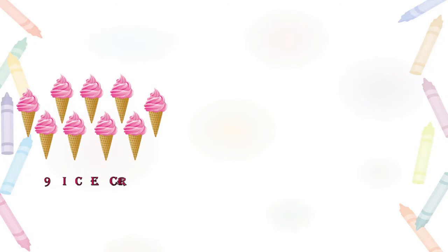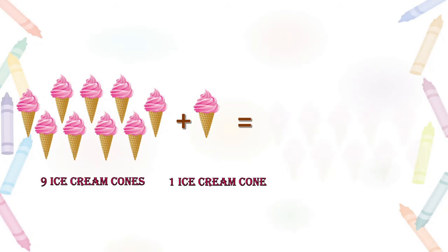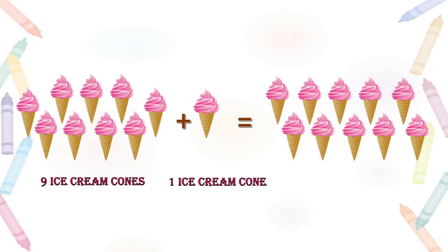Here you can see 9 ice cream cones — sweet and fluffy! We will add 1 more ice cream cone to these 9 ice cream cones. Yes, they together make — let us count: 1, 2, 3, 4, 5, 6, 7, 8, 9, 10. We got 10 ice cream cones.